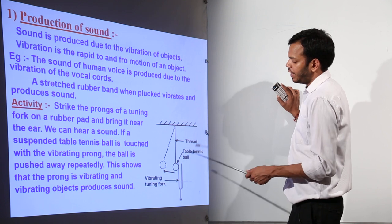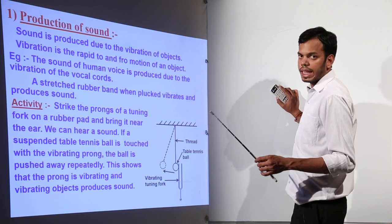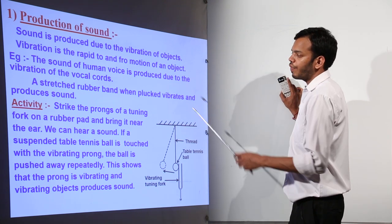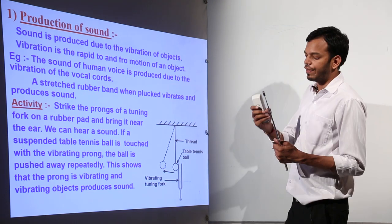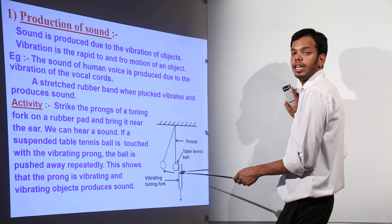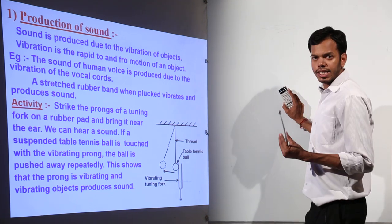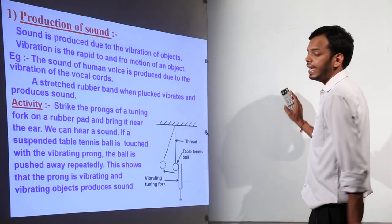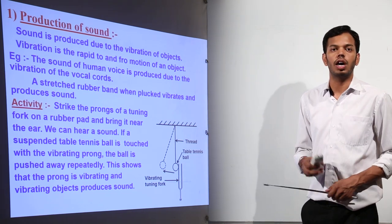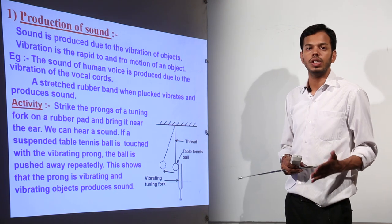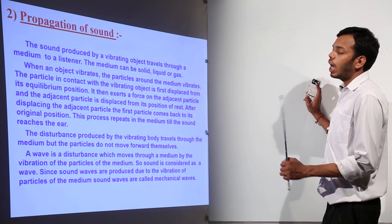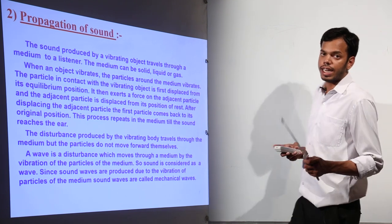This activity shows that vibrations produce sound. Strike the prongs of a tuning fork — suppose you strike it on the table and place it very near to a hanging bob, which is a small metal ball. When it starts touching the bob, the vibrations produce a continuous sound. This is an activity that demonstrates how vibrations produce sound and how sound propagates.